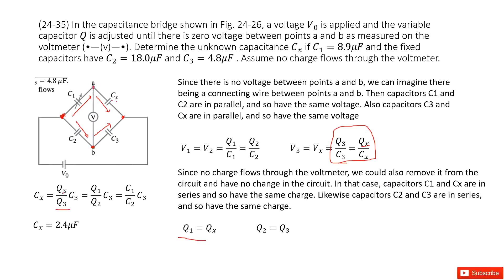Now you can see Qx and Q3, we don't know. But the given quantities are C1, C2, C3. That means we need to connect the Qx and Q3 with the capacitance. Qx equal to Q1, so we replace it there. And Q3 equal to Q2, so we replace it there. So we get the equation look like this one.